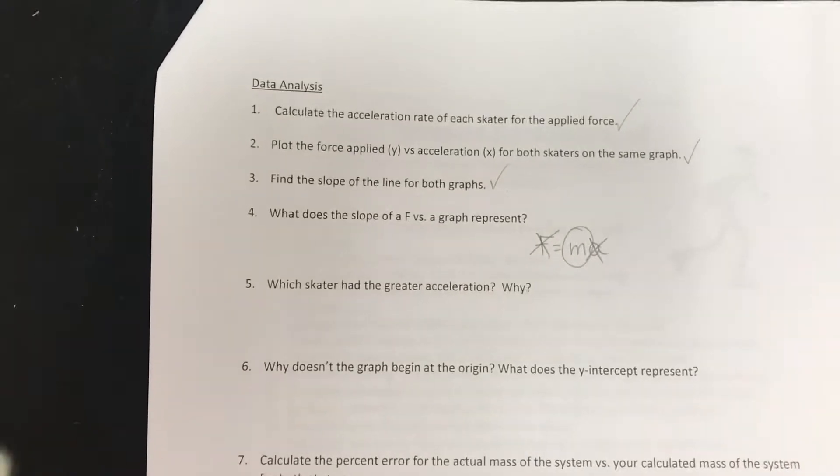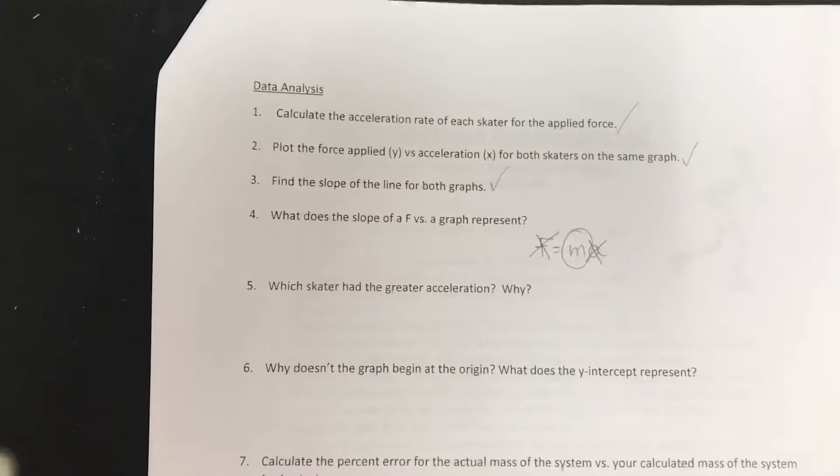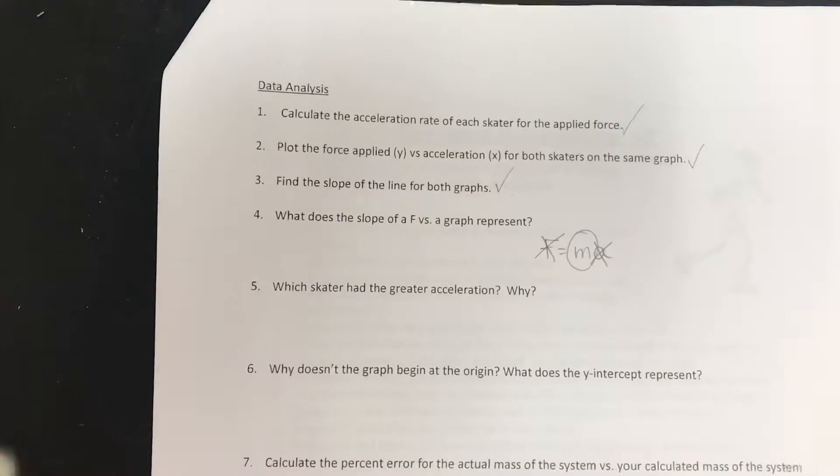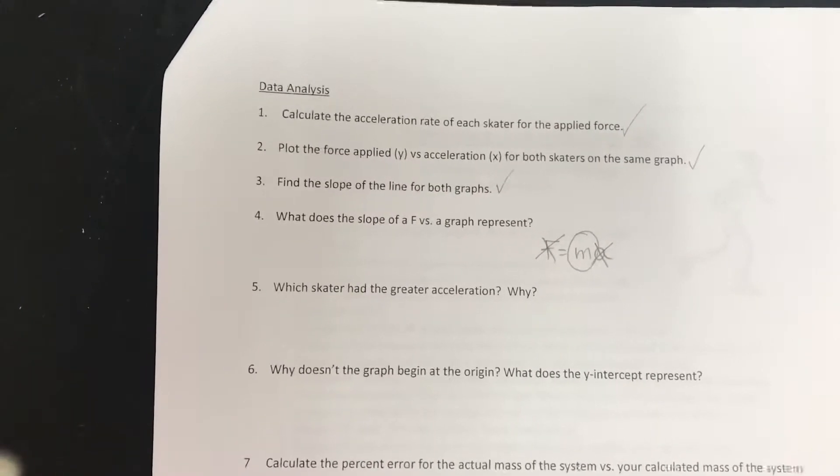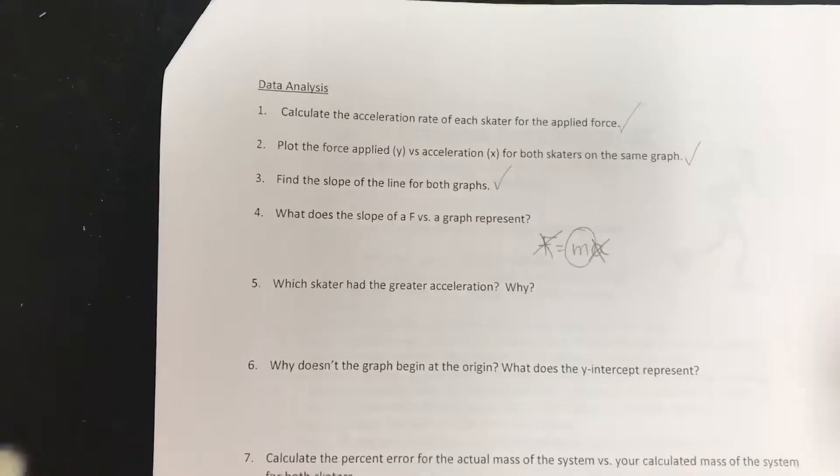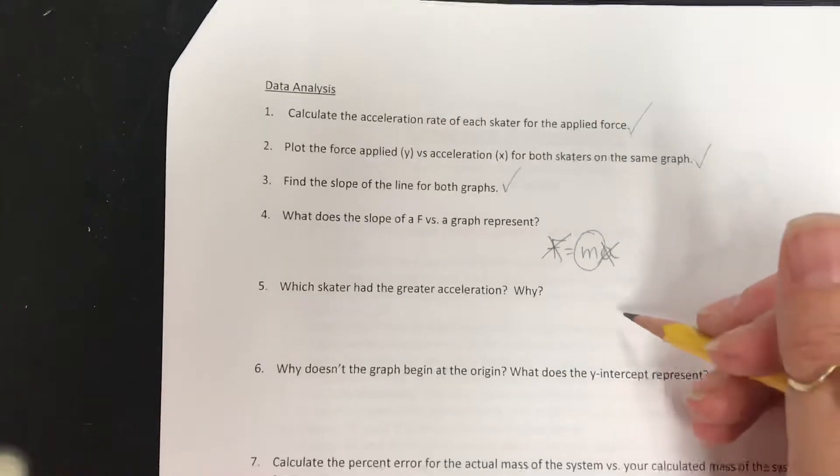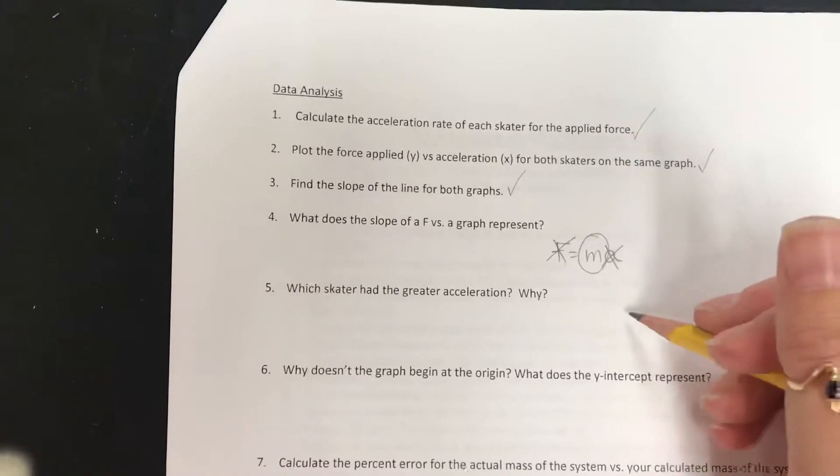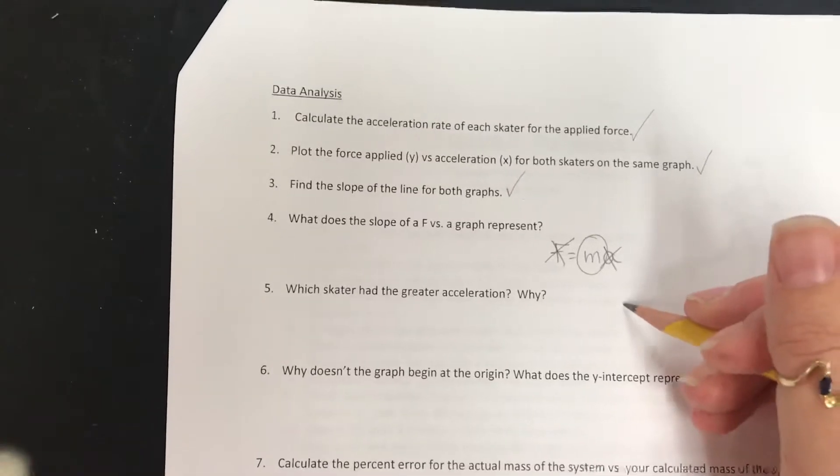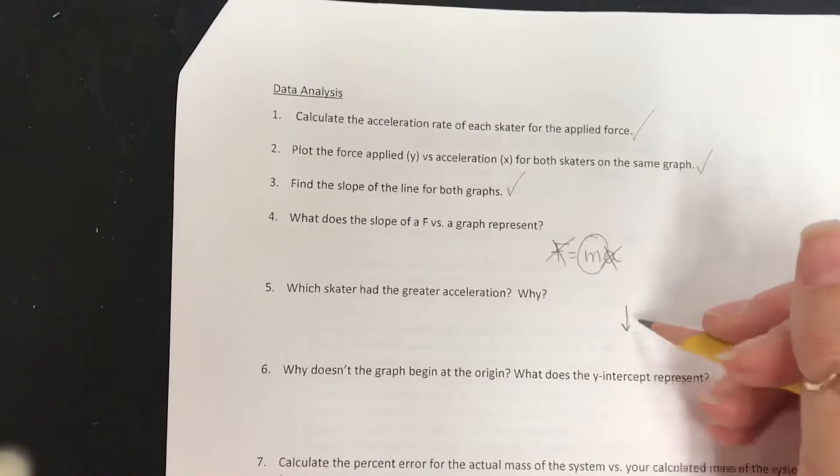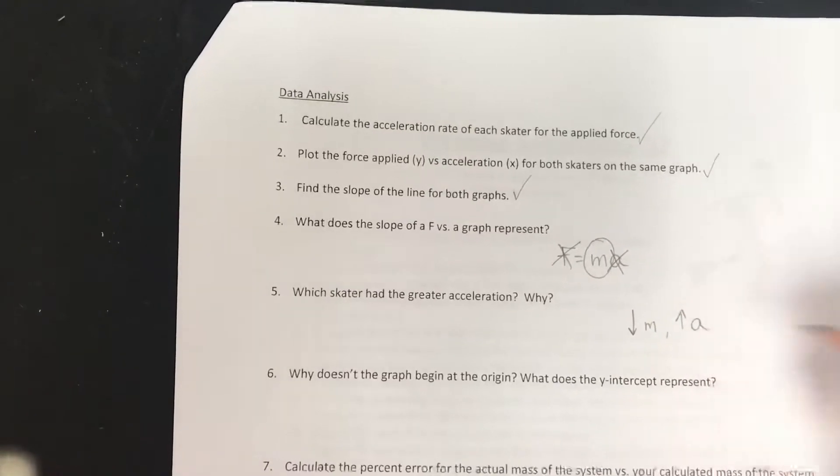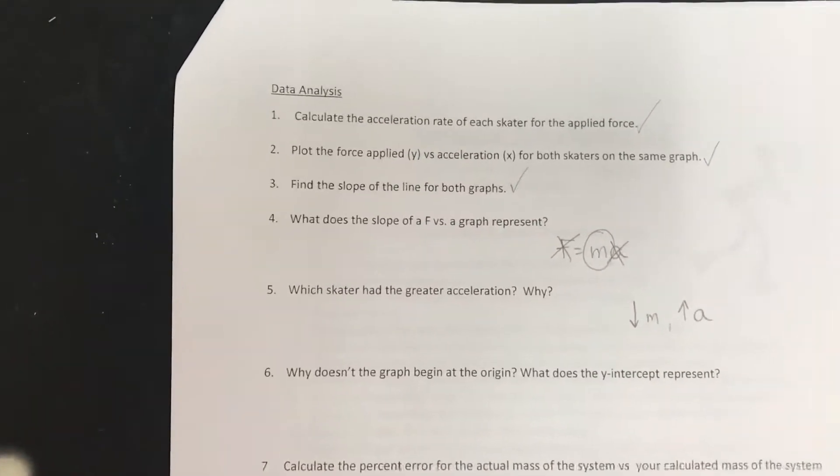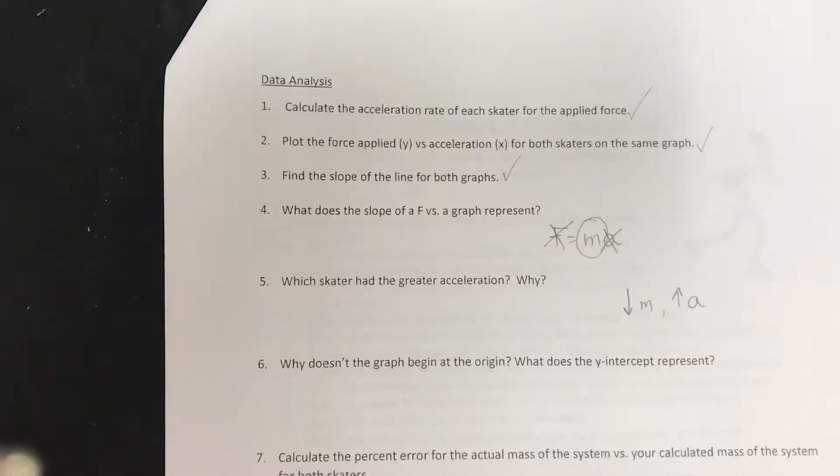Next, ask yourself which skater had the greater acceleration and why? Pause this video for a second and talk about it. The skater that had the greatest acceleration should have been the skater with the smallest mass. Because when your mass is smaller, your acceleration is larger. You should have hopefully seen that Adam was the one that had the greatest acceleration.